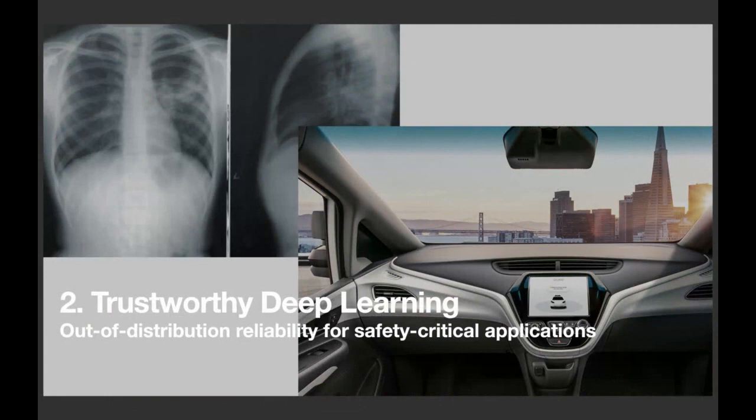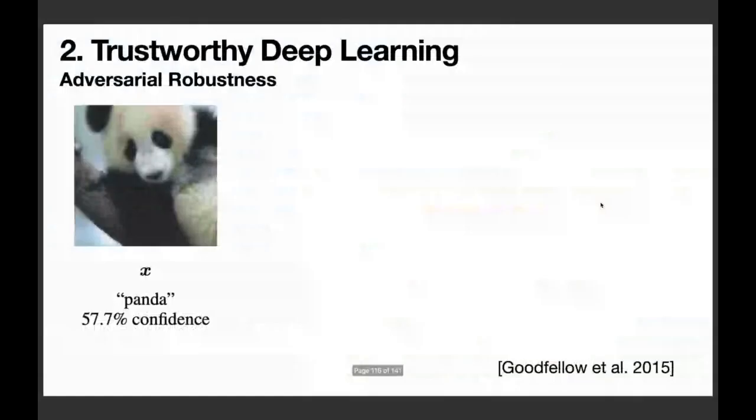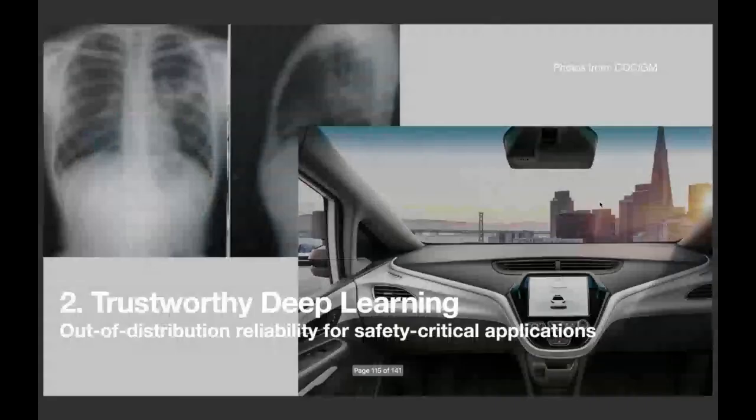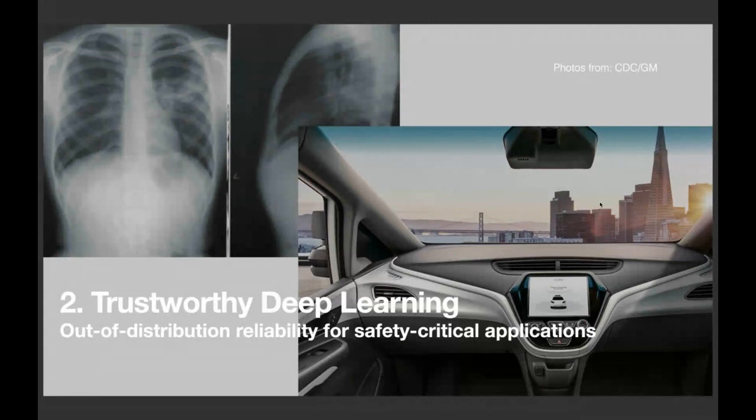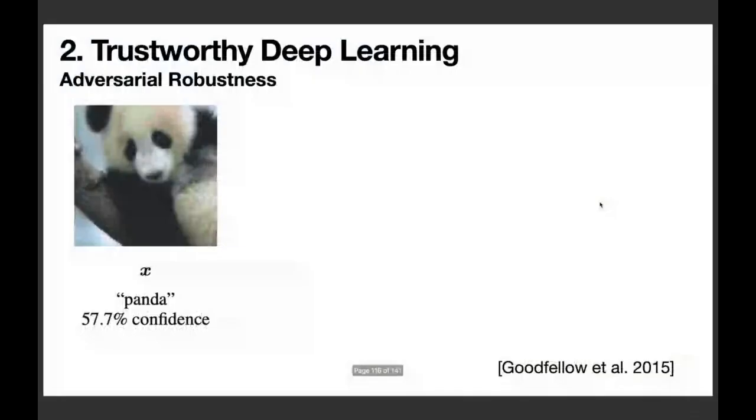For example, you might get a picture of a bird that goes into your food image classifier. In this scenario, you should ideally identify this input to be somewhat strange. Your network should be flagging this image to be anomaly or out of distribution instead of classifying into one of your food classes. This problem of out of distribution reliability is even more crucial especially for those safety critical applications, for example, identifying COVID from regular pneumonia chest x-rays or in autonomous driving, identifying unexpected objects on the street.